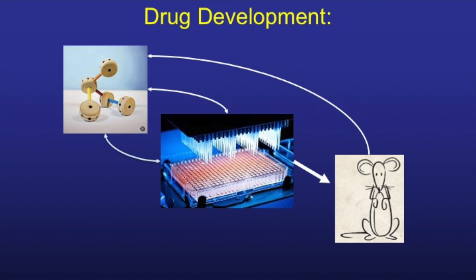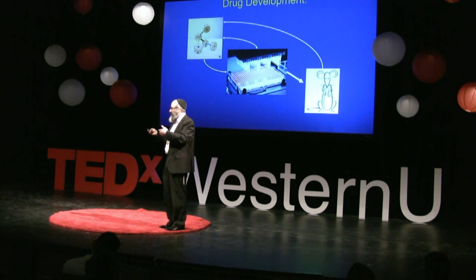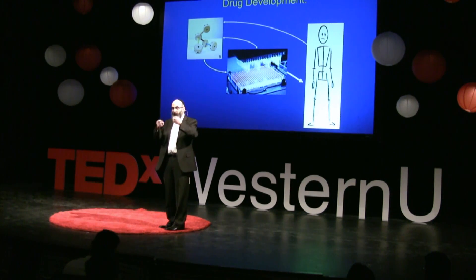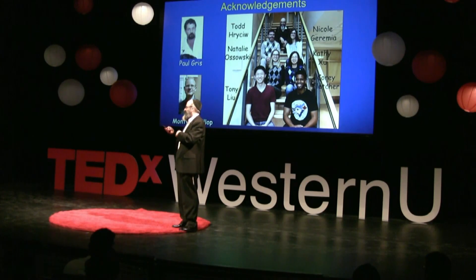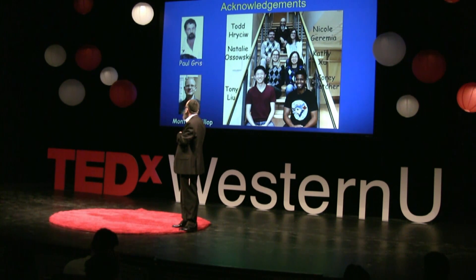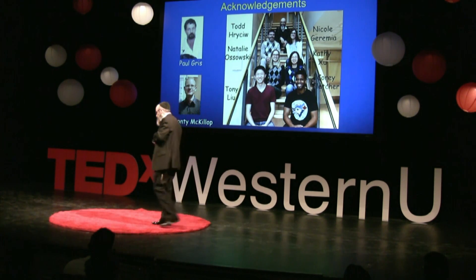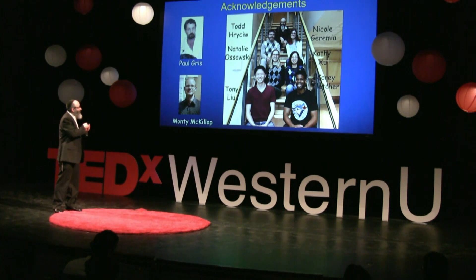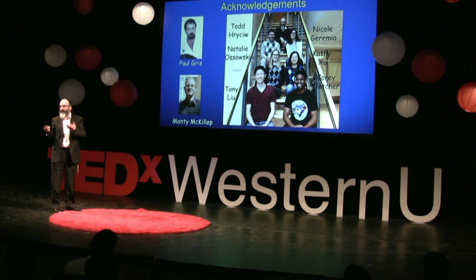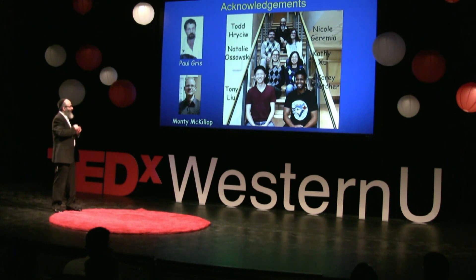We try to take what we know genetically — we're now doing drug discovery — and eventually we hope to find a SOX9 inhibitor that could be brought into the human condition. I want to thank the people that do the work. This work was done in my lab — it began with Paul Griss, a PhD student now a scientist in Montreal, and Monty McKillop, a PhD student now a scientist in Wisconsin. My current lab members Nicole Jeremia, Todd Hirschew, and Kathy Zhu have been with me each for longer than a decade and are why we get things done. My current students are Natalie Osowski, Corey Fletcher, and Tony Liu. Thank you for your attention.